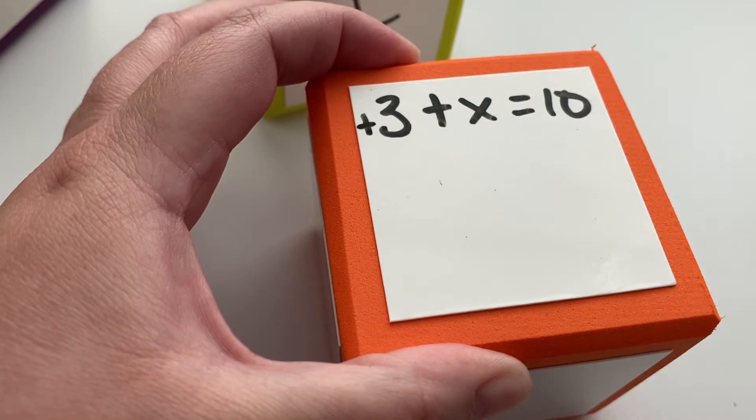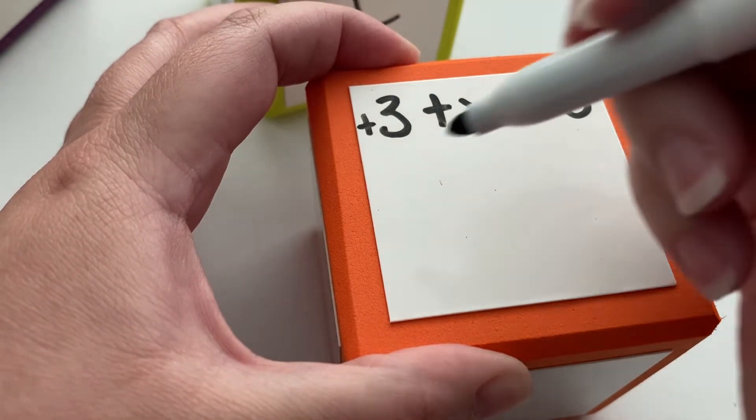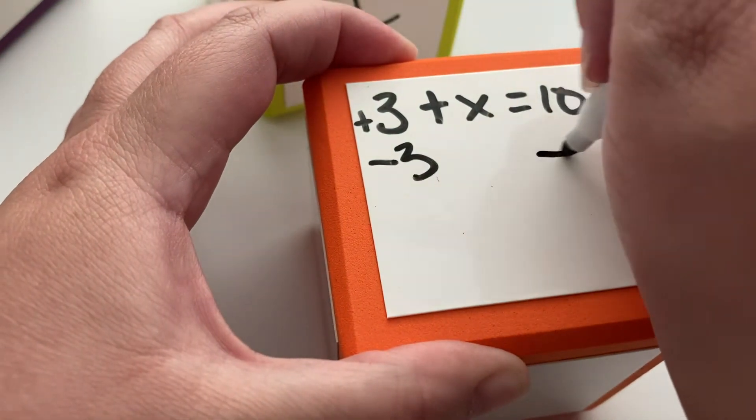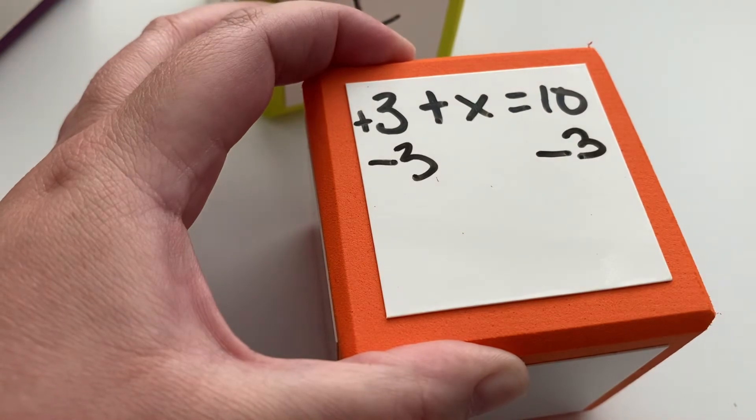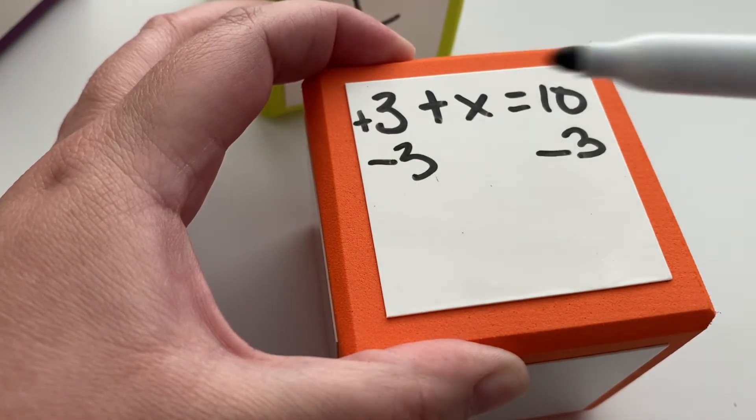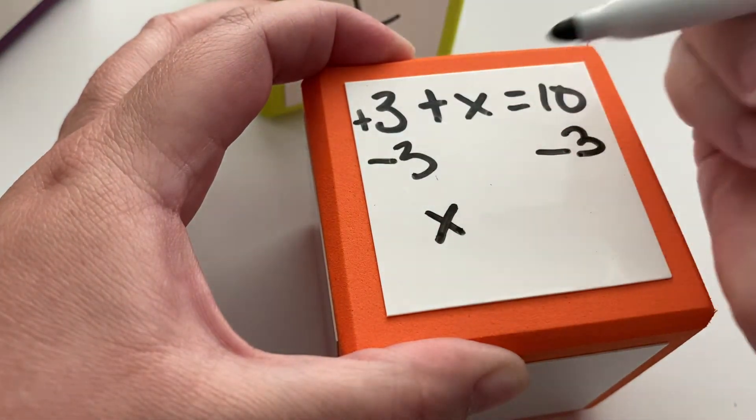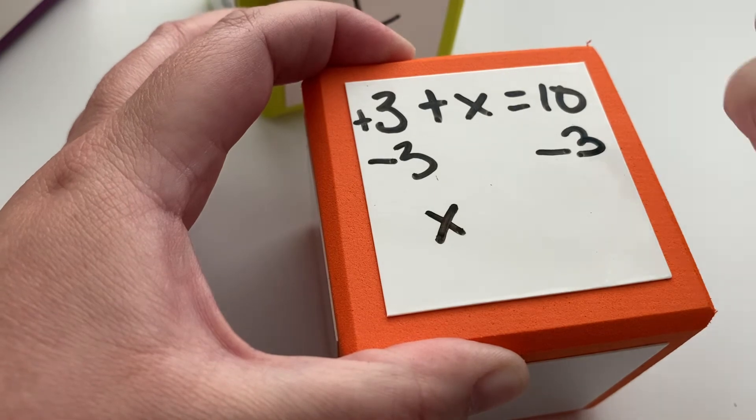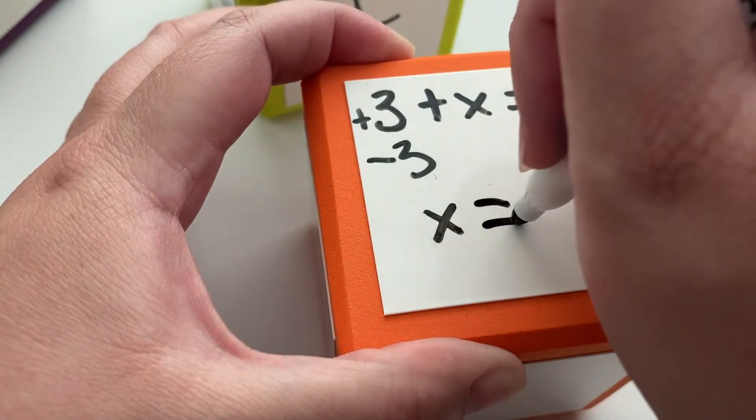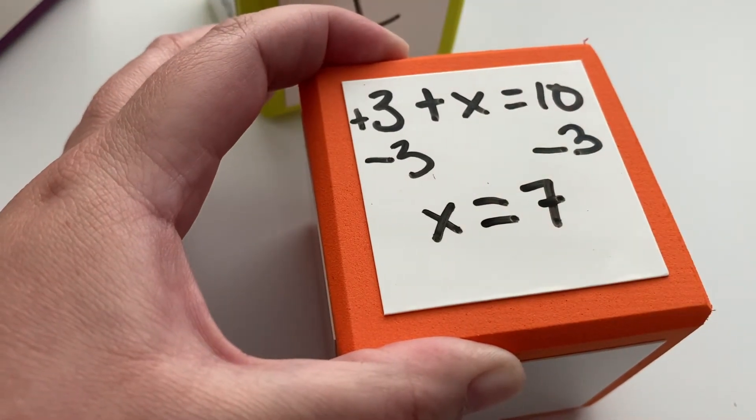So we can get rid of the 3 or move the 3 over, however you want to look at it, and keep the equation balanced by doing the same thing to both sides. So when we subtract 3 from this side, we're left with x because 3 minus 3 is 0. And on this side, 10 minus 3 is 7. So we keep our equal sign. There are two sides going on here. And we get x equals 7.